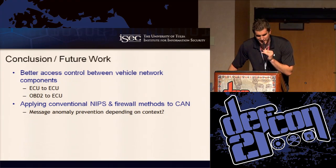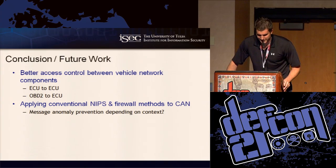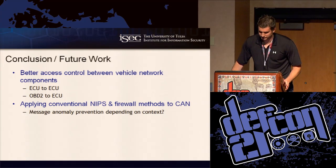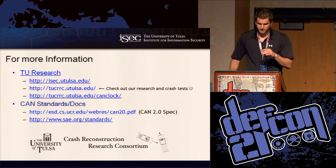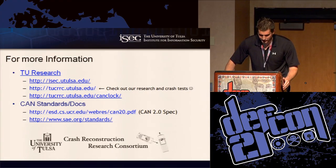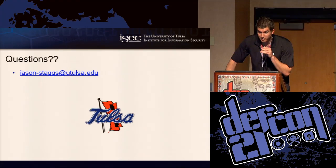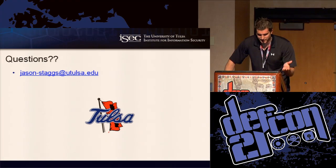Some sort of message anomaly detection based on the context of other messages present on the CAN bus could help—for example, there shouldn't be a message applying full throttle to the accelerator while simultaneously applying full pressure to the brakes. If you're interested in the research we're doing, links to our sites and work in progress are available. A full tutorial and source code is on our site, so feel free to check it out. I'll be around, so if you see me feel free to come ask questions. Thank you very much.